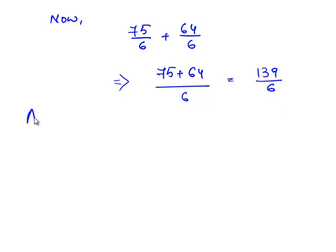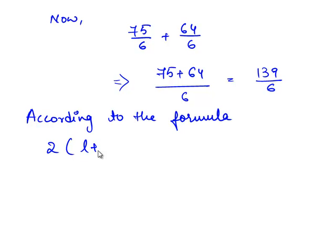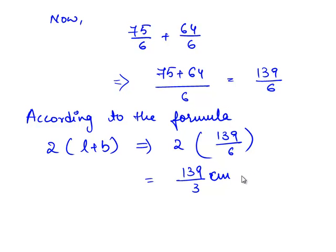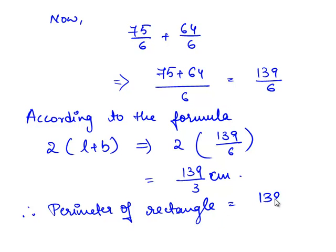According to the formula for the perimeter of the rectangle, that is 2(L + B), we have 2 times 139/6, which gives 139/3 centimeters. Therefore, the perimeter of the rectangle is equal to 139/3 centimeters.